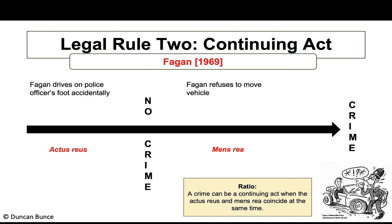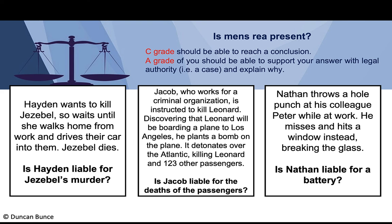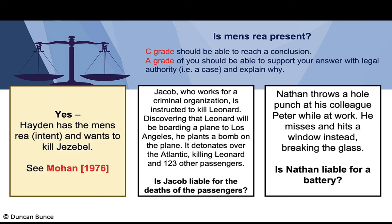Scenario one: Hayden wants to kill Jezebel, waits until she walks home from work, and drives their car into her. Jezebel dies. Is Hayden liable for murder? This is a clear-cut case of direct intent — it is Hayden's desire, their intention, to have that consequence occur. We would cite Mohan to support this.